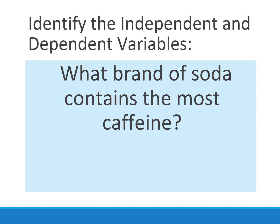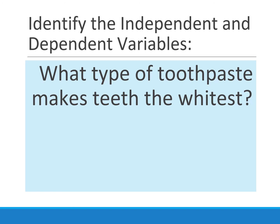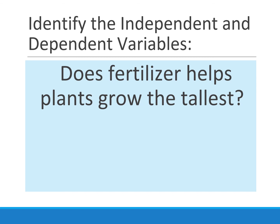Let's identify those in the following questions. What brand of soda contains the most caffeine? The IV is the brand of soda, and the DV is the amount of caffeine. What type of toothpaste makes teeth the whitest? The IV is the type of toothpaste, and the DV is the whitest teeth. Does fertilizer help plants grow the tallest? The IV is fertilizer or no fertilizer, and the DV is how much or how tall they grow.